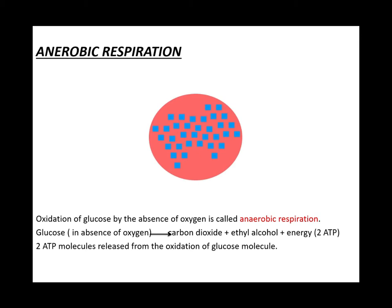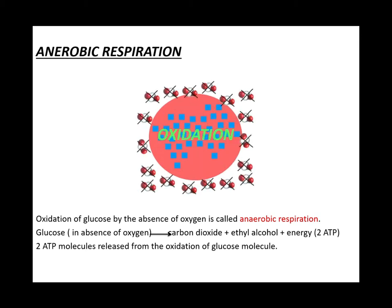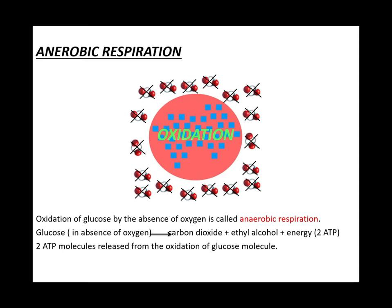When oxidation takes place in the absence of oxygen, it is called anaerobic respiration. In this process, glucose is not completely oxidized to form carbon dioxide and water. The equation is: glucose, in the absence of oxygen, produces carbon dioxide plus ethyl alcohol plus energy — that is 2 ATP molecules released from the oxidation of one glucose molecule.